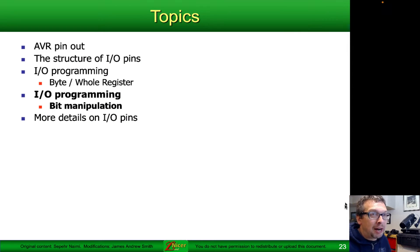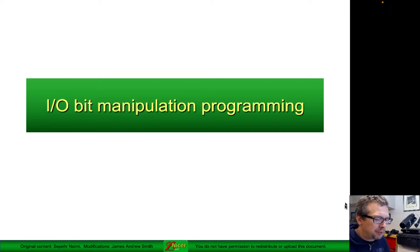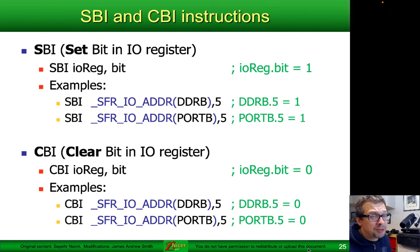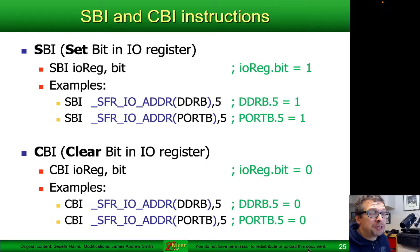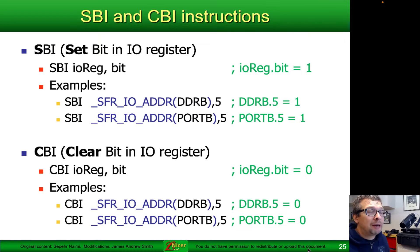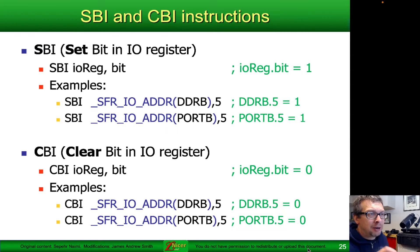Now we're going to talk about bit manipulation on an I/O port — specifically individual bit manipulation. Let's look at two important commands in AVR ATmega assembler for clearing and setting individual bits one at a time. First, the set bit command for an I/O register: you specify the address to be manipulated and which bit at that address to change. Setting means making it a value of one. So, to set the data direction for port B bit 5, we use SBI SFRIO address DDRB comma 5.